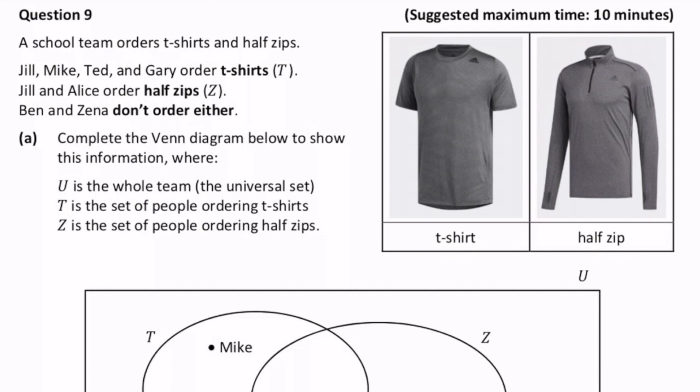Complete the Venn diagram below to show this information where U is the whole team, the universal set. T is the set of people ordering t-shirts. Z is the people ordering half-zips.